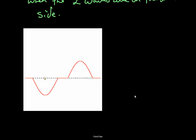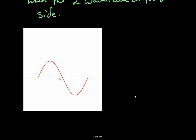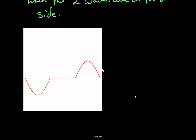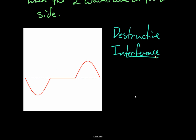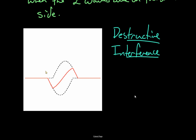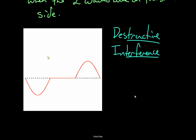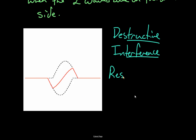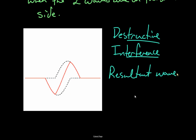Now let's look at destructive interference. Over here we have interference doing the opposite of the last one. You'll notice the sum of these two waves — right in the center right now is a flat line. These amplitudes exactly cancel one another out, and then the energy pulse continues on afterwards. This is destructive interference. The resultant wave has a lower amplitude than the input waves.